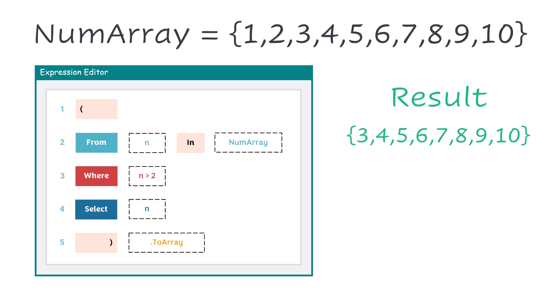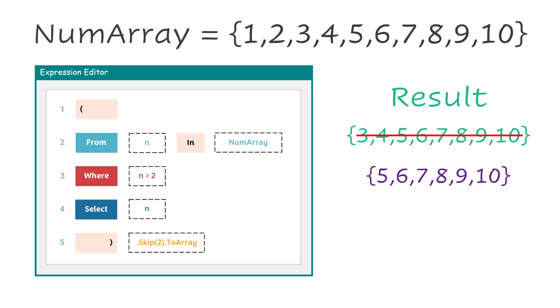Assume I don't want to get all 8 numbers, but only the last 6 numbers. In this case I can use the Skip function to ignore the first 2 numbers from the result, so that I get only the last 6 numbers. I added the number 2 because I want to ignore the first 2 numbers which meet the condition. The result now is these 6 numbers. I use the Skip function after the query — in this way I've filtered the output of the query.